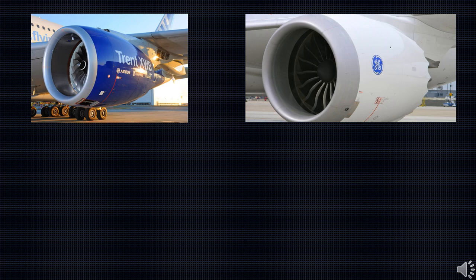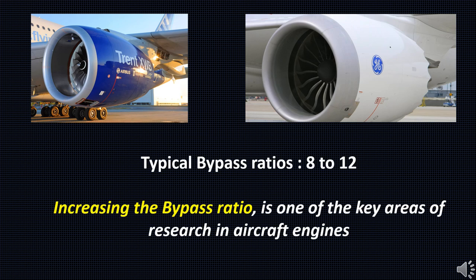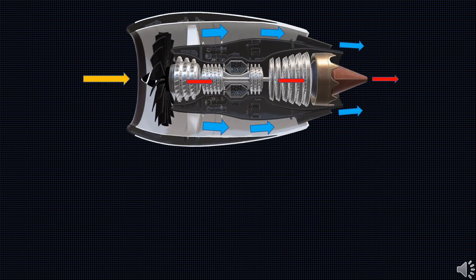The typical bypass ratio of high bypass ratio turbofan engines like the Rolls-Royce Trent XWB engines or the General Electric's next-gen engines are in the range from 8 to 12. The 80 to 90 percent of the total thrust is produced by the bypass flow of the air.